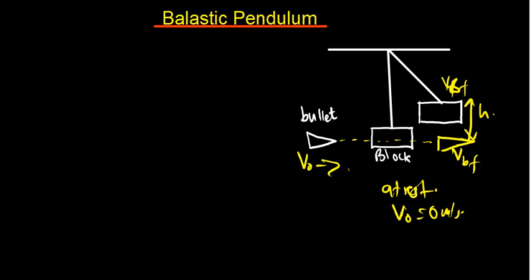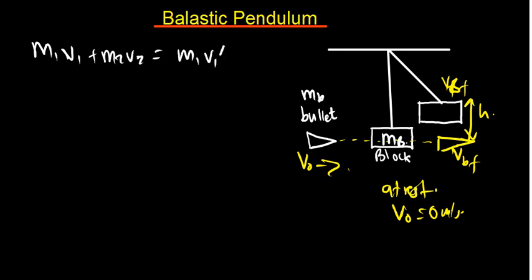When a ballistic pendulum is under elastic collision, we can come up with the formula. If this is the mass of the bullet — small letter m_b — and the mass of the block — capital M_B — the elastic collision formula is: m1·v1_initial + m2·v2_initial = m1·v1_prime + m2·v2_prime, where prime denotes the final velocity.